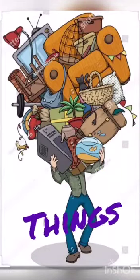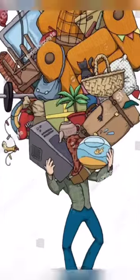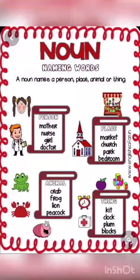What things can you see here? Kite, ball, a paint box, and a top. So these are names of things, and thus nouns.